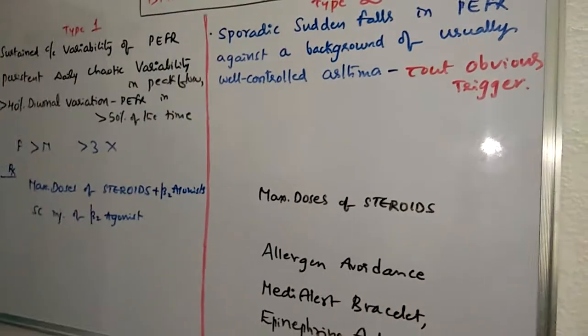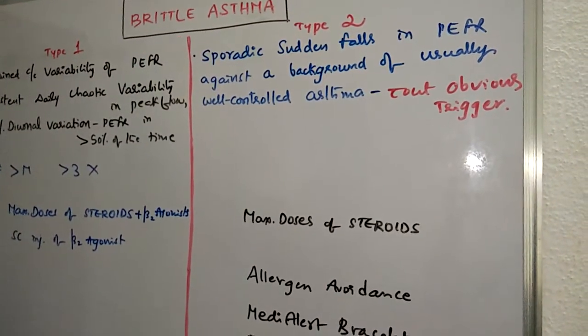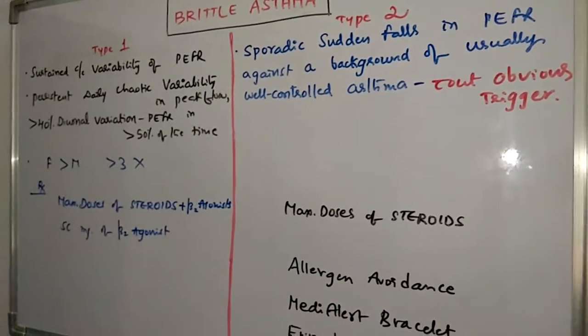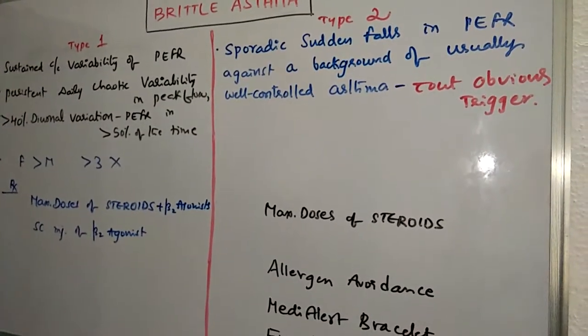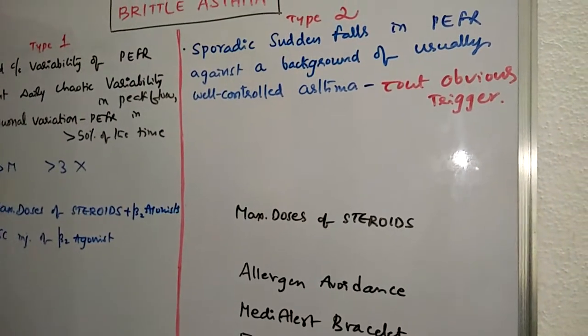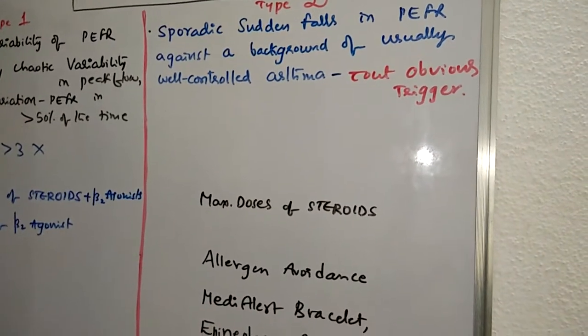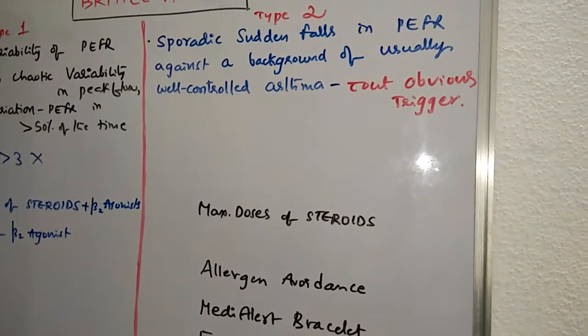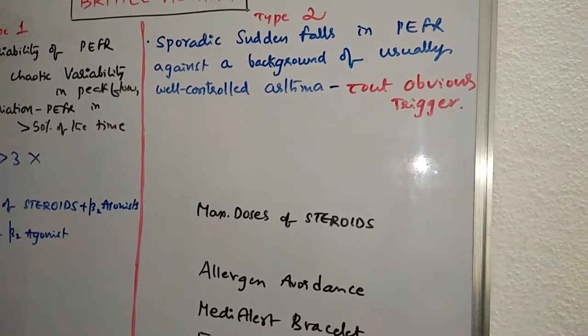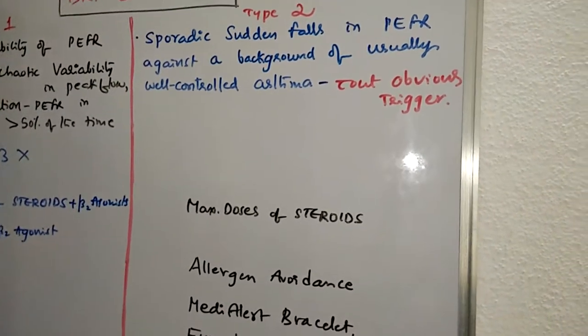Type 1 has persistent daily chaotic variability in peak flow, usually more than 40% of diurnal variation in peak expiratory flow rate in more than 50% of the time. Type 2 is characterized by sudden sporadic falls in peak expiratory flow rate against a background of usually well controlled asthma with normal or near normal function and without an obvious trigger.